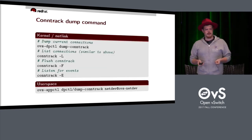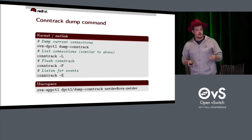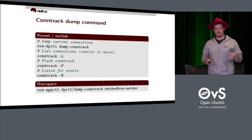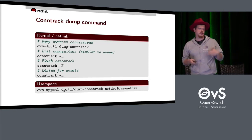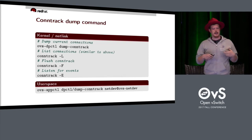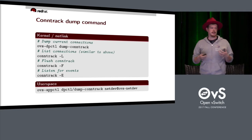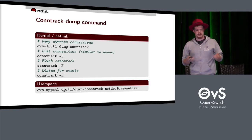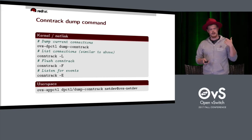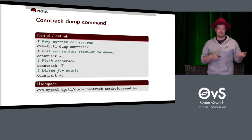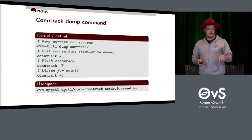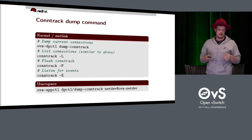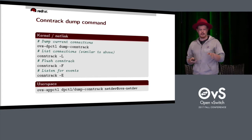These are the conntrack dump commands. The kernel has conntrack tools with support for listening for events. You can use OVSDPCtl dump-conntrack to dump the entire conntrack table, conntrack-l to list connections, and dash-f to flush them. OVSAppCtl is how you interact with the user space conntrack using dpCtl dump-conntrack.